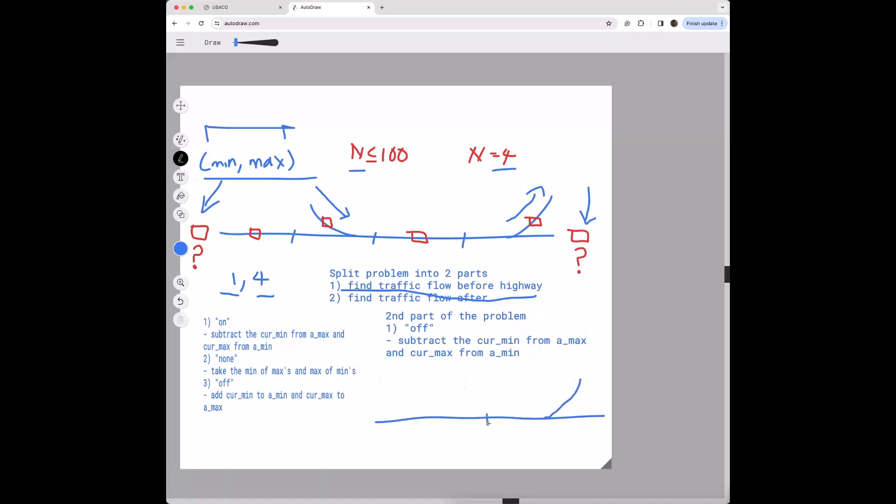And so if we have like one and two and here we have four and five. So we're trying to find whatever is here. And we're going to iterate this way. And so we have a min and a max as four and five. And then we were given that at least one or at most two units of traffic come off before this before the end of the highway.